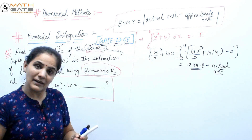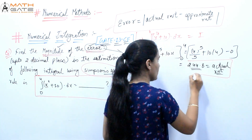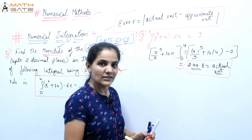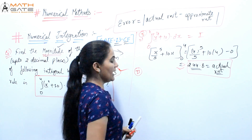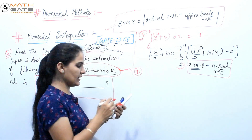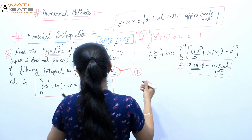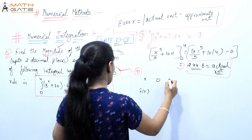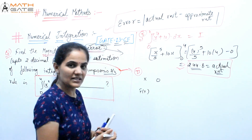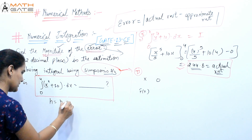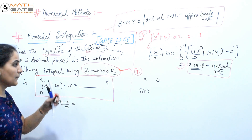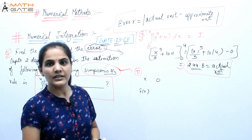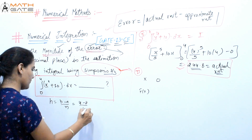Now we will find the approximate root using Simpson's method. Let's make a table of x and f(x). x starts from 0 and finishes at 4. h = (b−a)/n, and for Simpson's, n must be even, so we take n=4. Therefore h = (4−0)/4 = 1.